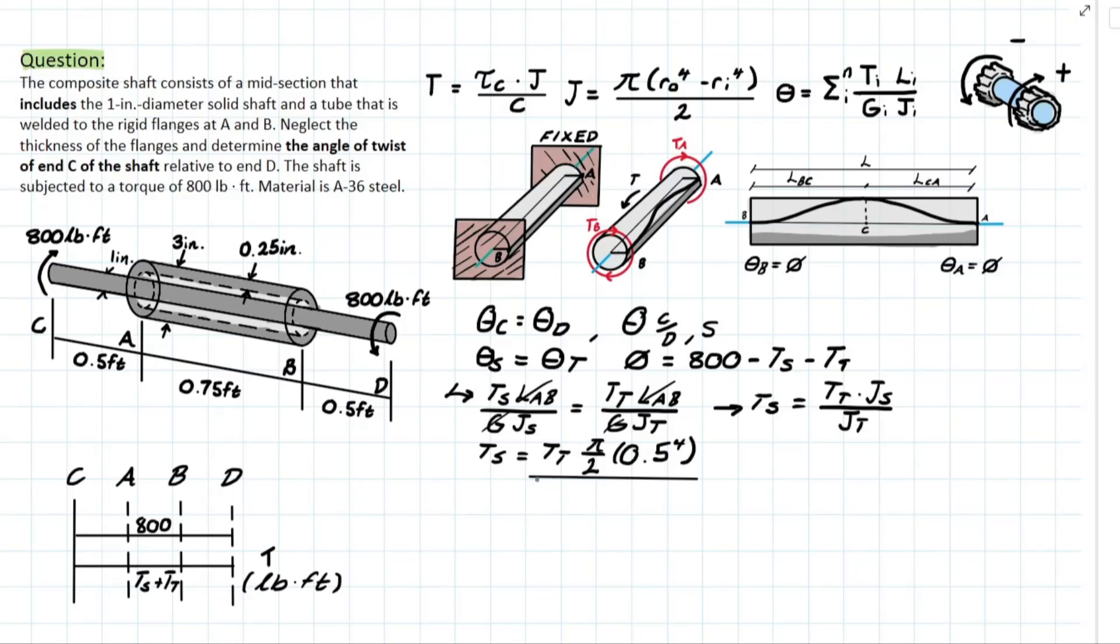Now for the bottom we have to consider the tube. And the tube is a hollow pipe. So we're going to have something that looks like this where we have pi over 2 and we're taking the outside radius minus the inside radius or the hollow part. So we're going to have 3 divided by 2 which is 1.5 to the 4, subtracting 1.25 to the 4. And solving that we're going to be left with TS is equal to 0.0238 TT.